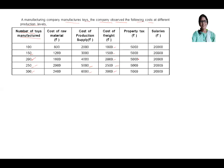Property tax for the business is a constant — 5000 for any number of toys. Salaries are also constant at 20,000 for all production levels. Now after observing this table, you are given some questions.